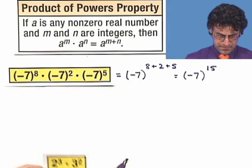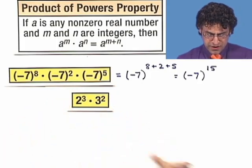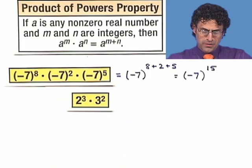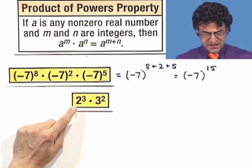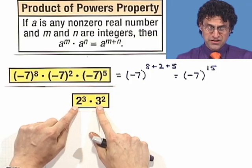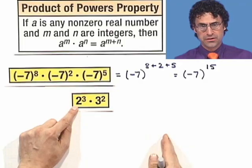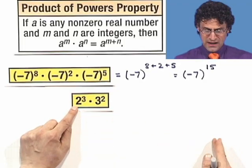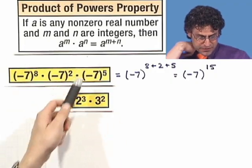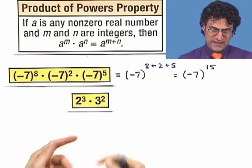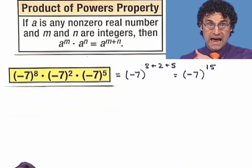What about 2 cubed multiplied by 3 squared? The base here is 2 and the base here is 3 — they're different. If I write this out, I see 2 times 2 times 2 multiplied by 3 times 3. I can't combine them. I can't use this property to simplify the expression because they have differing bases.